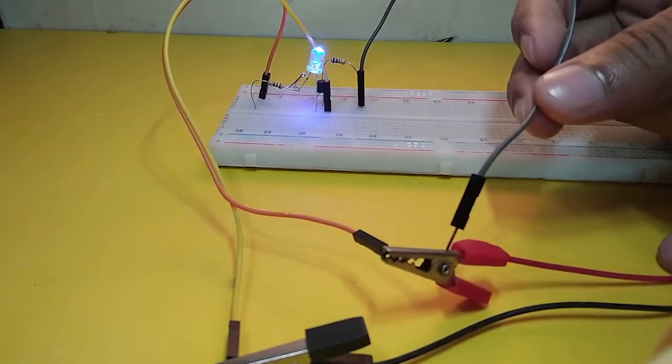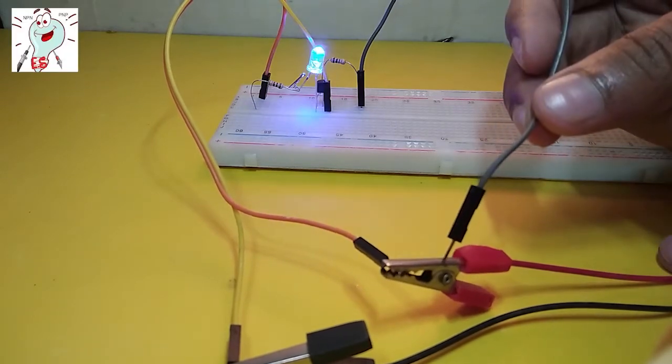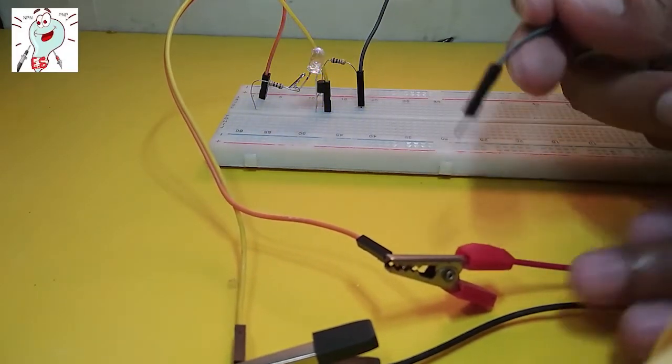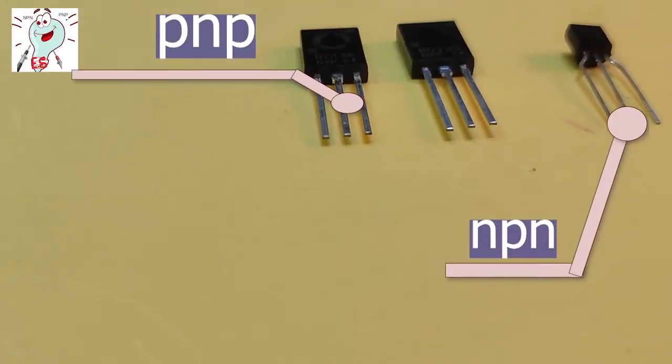Hello viewers, this is Imtiaz Khan, and today I'm going to show you how to use a transistor in any kind of circuit. Basically, there are two types of transistors: one is NPN and another is PNP.